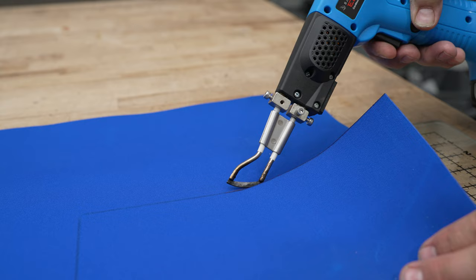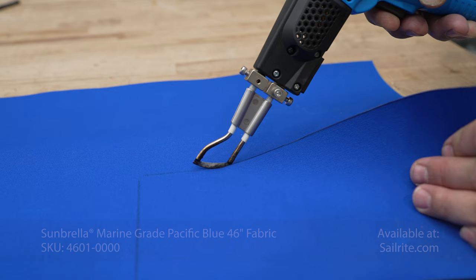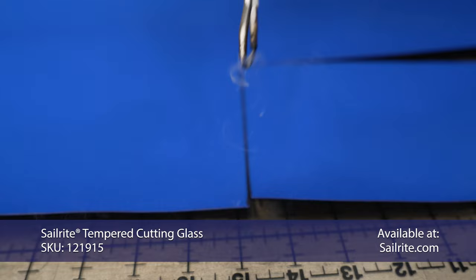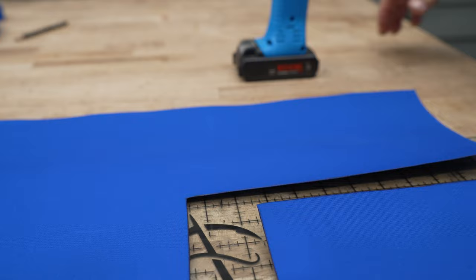We're cutting our Sunbrella Marine Grade fabric with a hot knife, mainly because a cut edge with a hot knife is sealed, and if the stitch falls close to that edge, it doesn't easily fall out. You don't have to use a hot knife, but we recommend it when doing binding so that you get the optimal edge.